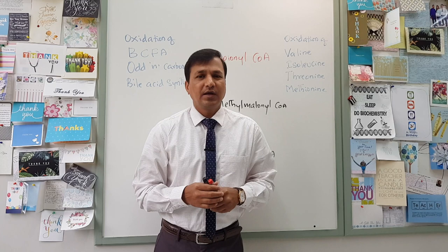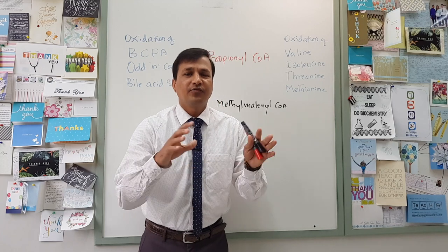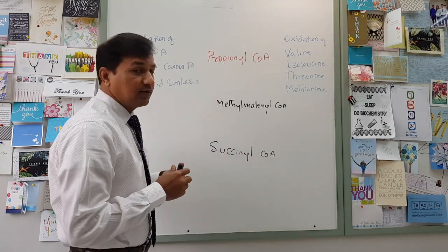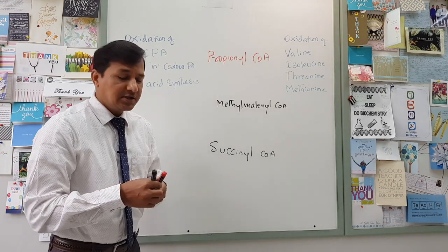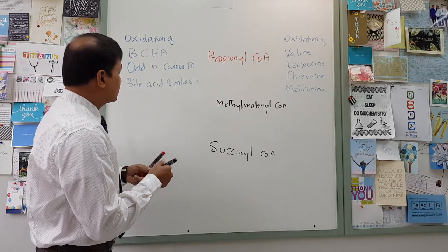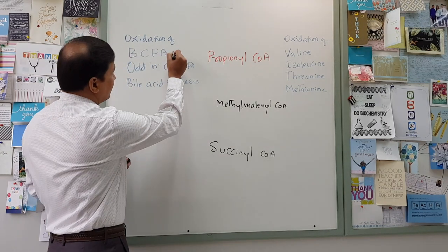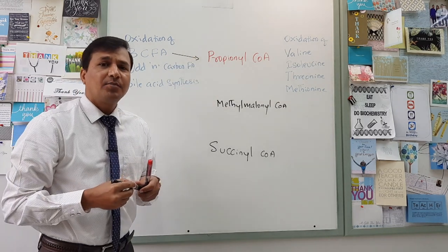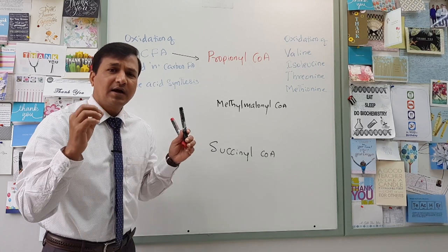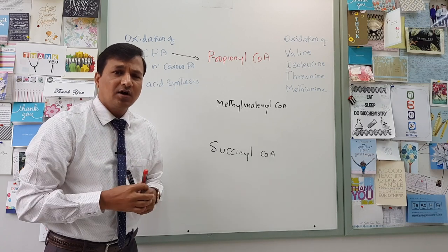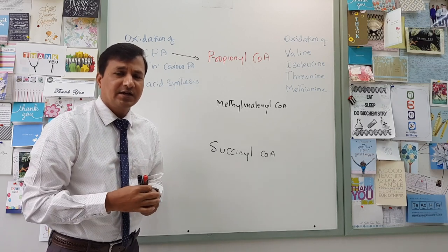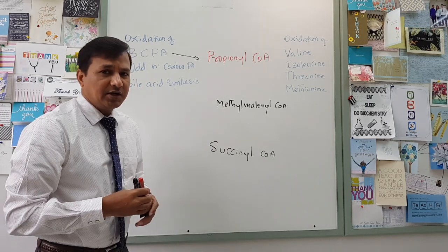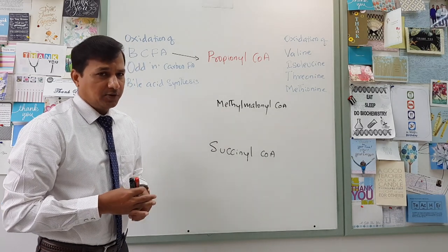Propionyl-CoA will come from different sources. First, Propionyl-CoA will come from oxidation of branched chain fatty acids — specifically phytanic acid in our body — and that will give Propionyl-CoA. I have a video on oxidation of phytanic acid and how exactly you get Propionyl-CoA there; the link for that video is in the description below.